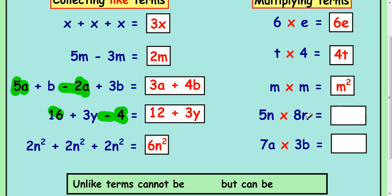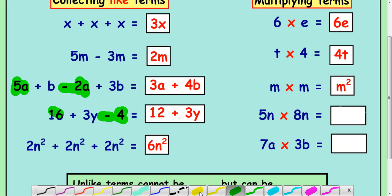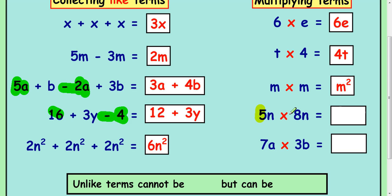Right, 5n times 8n. The way to do this is to do the 5 times the 8 first. That's going to be 40. And then do the n times the n, and that's n squared. So it's going to be 40n squared.